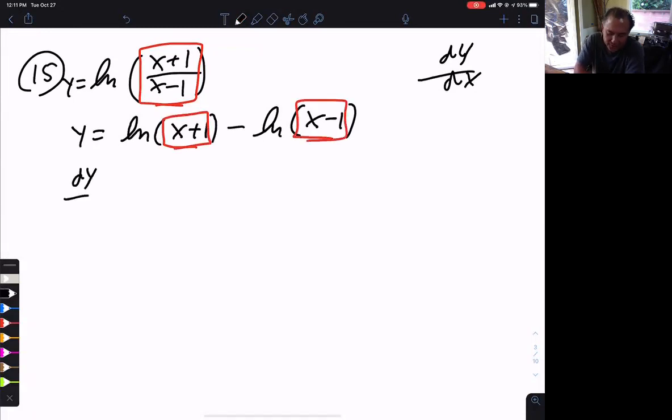So this becomes ln of box. This becomes ln of box. Look how nice this is. The derivative of ln of box is 1 over box times the derivative of box, minus, and the ln of box is 1 over box times the derivative of box. Wasn't that way easier? That was way easier.